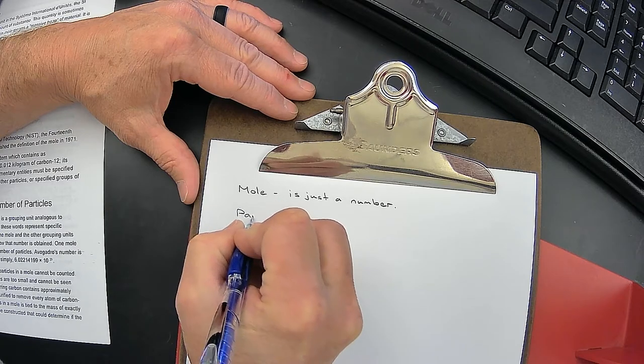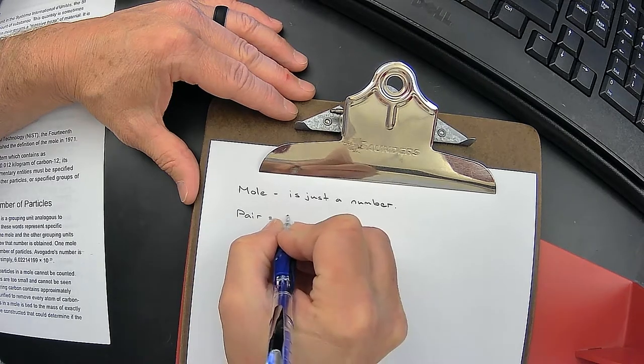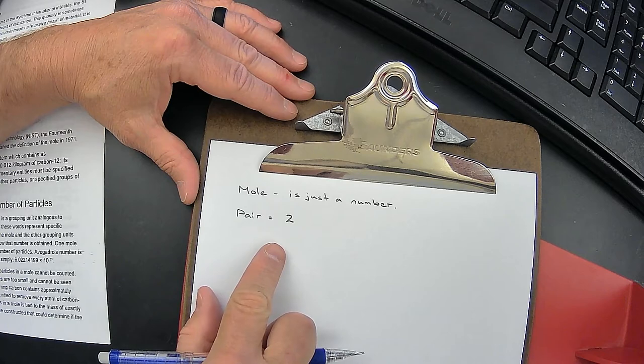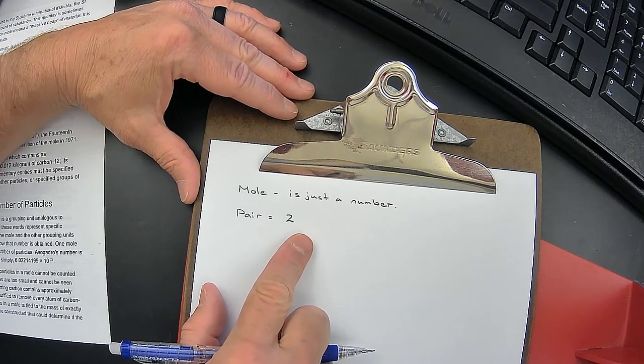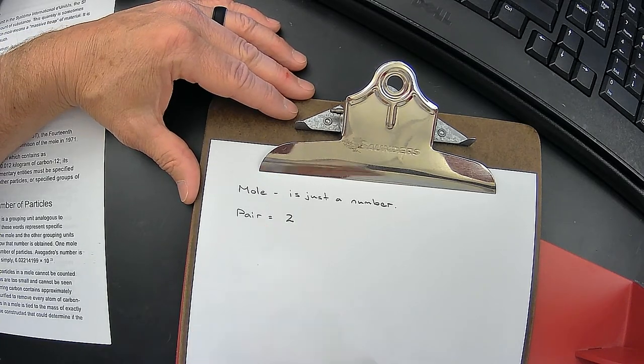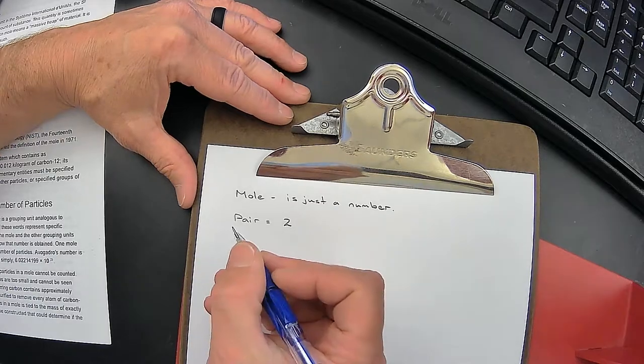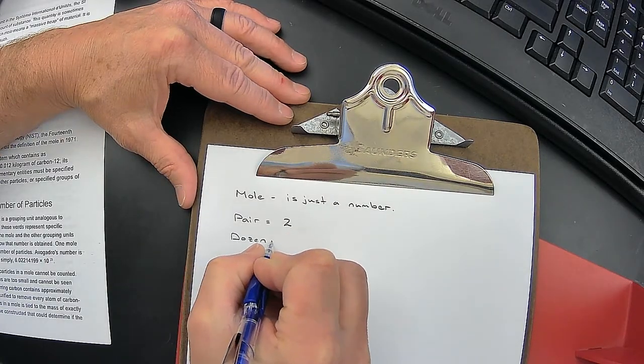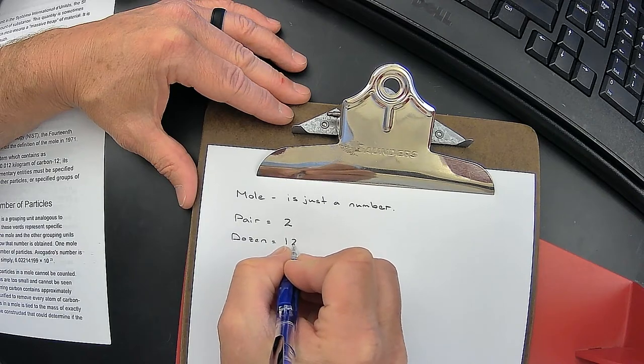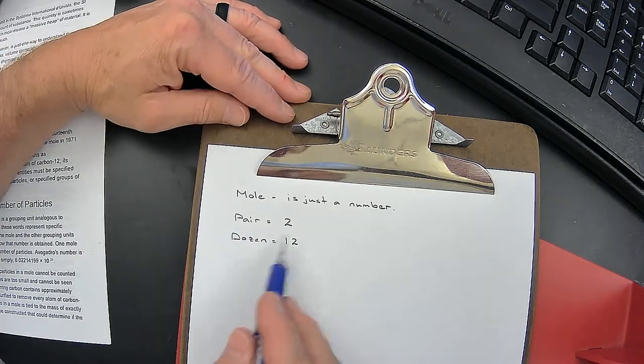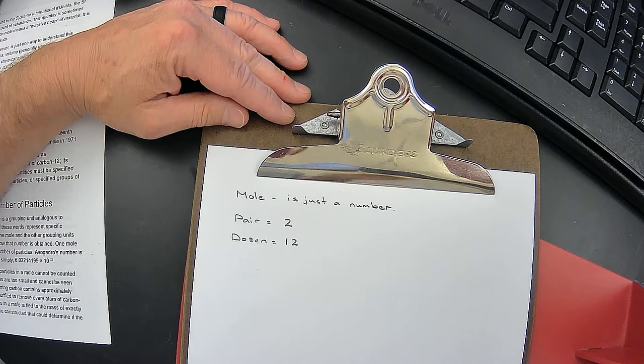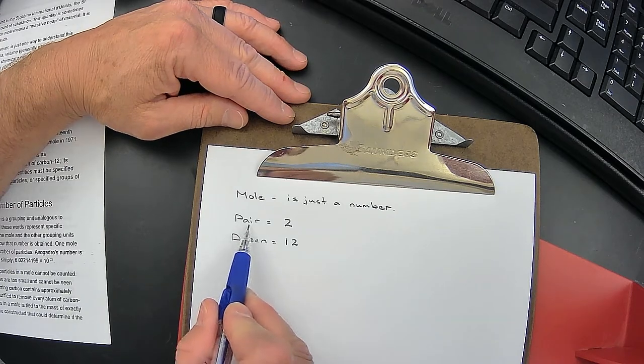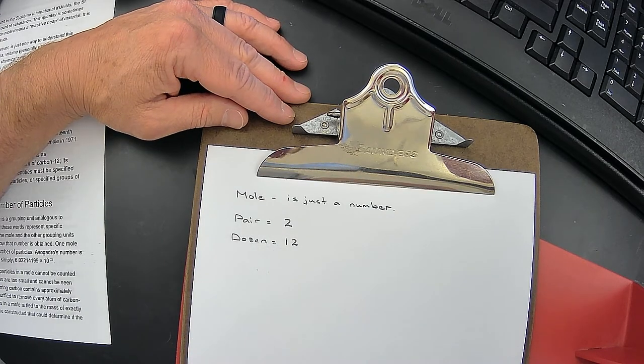One is the word pair. The word pair refers to two. If someone asks you to grab a pair of shoes, you're going to grab two shoes. A pair of gloves, you're going to grab two gloves. Just like the word dozen. The word dozen stands for twelve. If somebody asks you to get a dozen donuts, you're going to come back with twelve donuts.